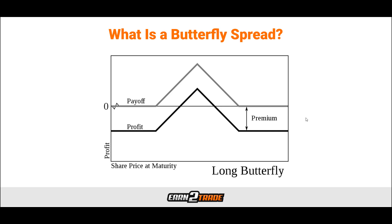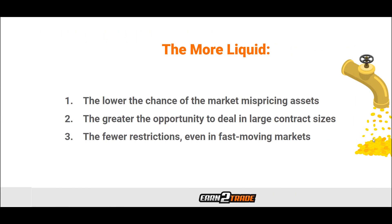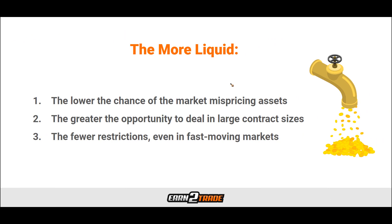When writing an option contract, you will receive a commission to allow someone to buy or sell an asset at a fixed price over a fixed period. When acquiring an option, you will pay for the opportunity to buy or sell an asset at a fixed price over a fixed period. For example, a Butterfly Spread strategy would involve four options — these could be four call options, four put options, or a mixture of the two.